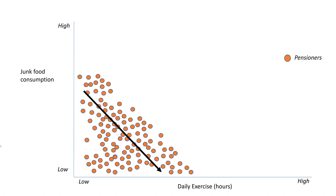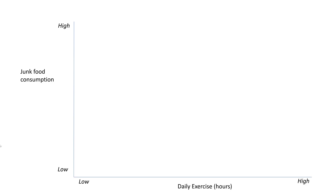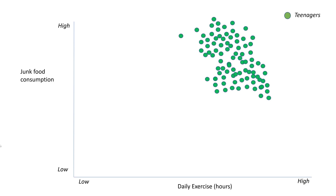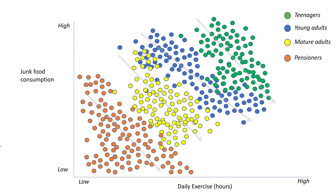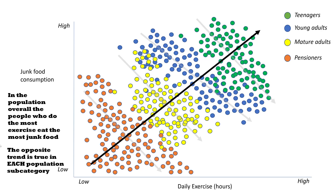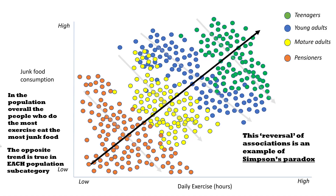As we go up in age category, both daily exercise and junk food consumption generally go down, which is correct — older people tend to do less exercise and eat less junk food than younger people. But when we aggregate all the data together across teenagers, young adults, mature adults, and pensioners, even though each age category showed a downward trend, in the population as a whole the effect is reversed: it appears that the more exercise people do the more junk food they eat. This reversal from each category to the general population is an example of Simpson's paradox.